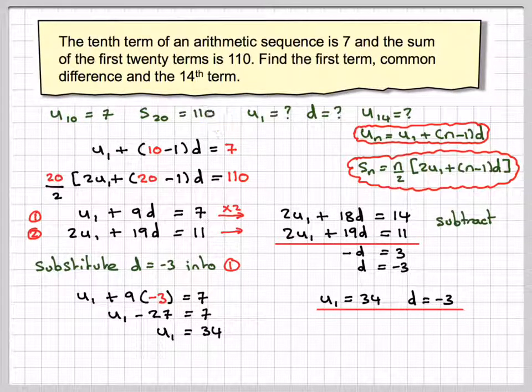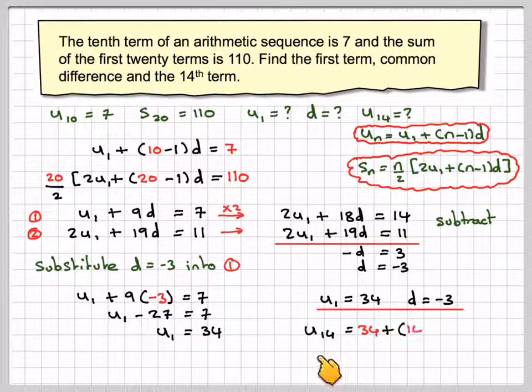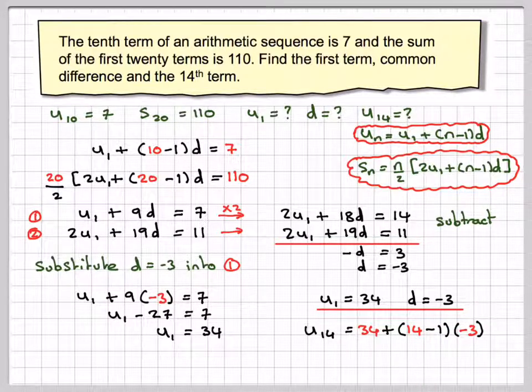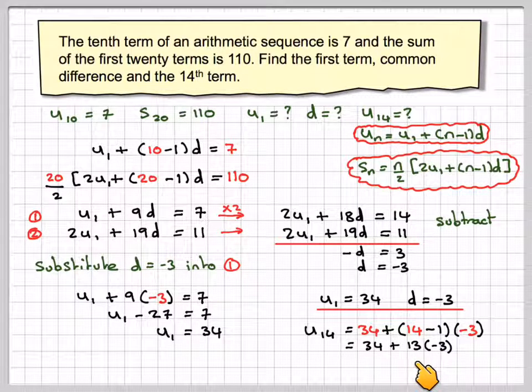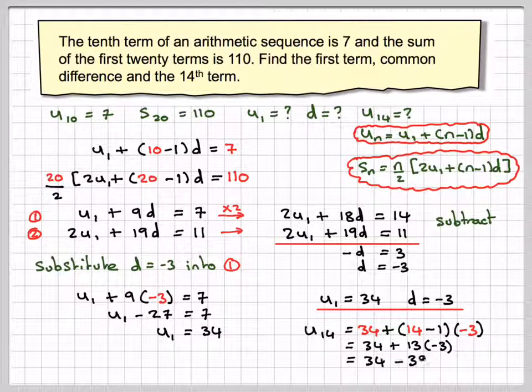Now using that, we now find the 14th term. So U14 will be 34, so using this formula here, plus 14 minus 1 times minus 3. So it's going to give me 34 plus 13 times minus 3. 34 minus 39, which gives an answer of minus 5.